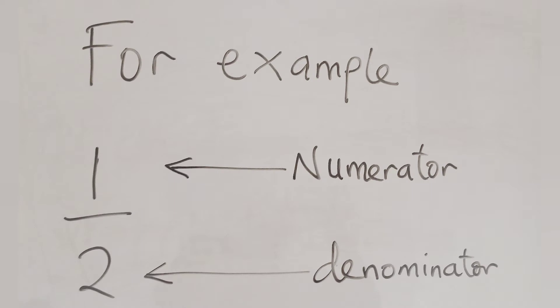For example, if we have a fraction 1 over 2, we say that 1 is the numerator while 2 is the denominator.